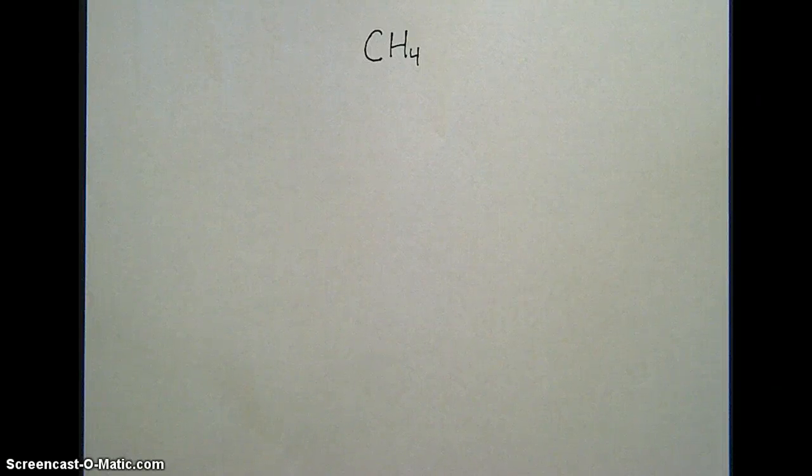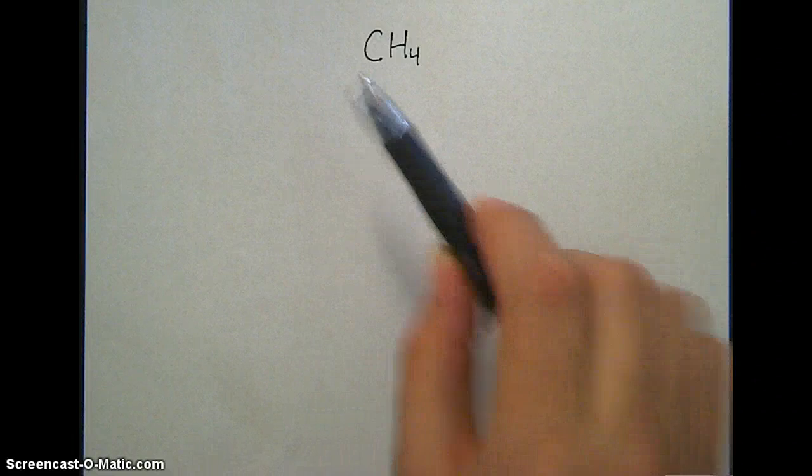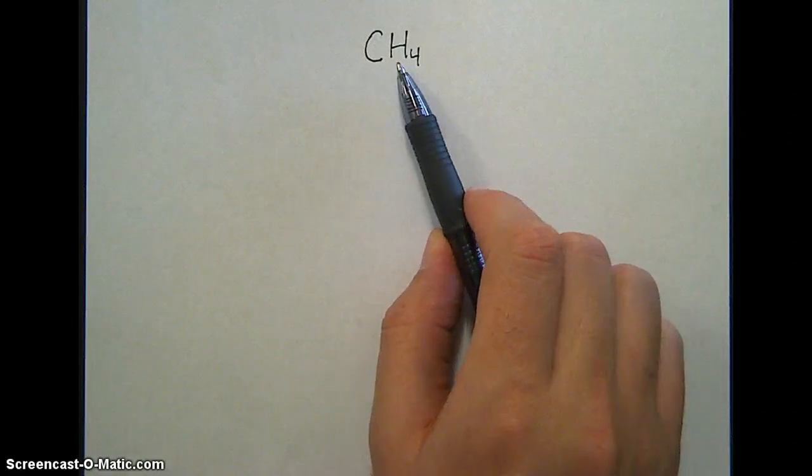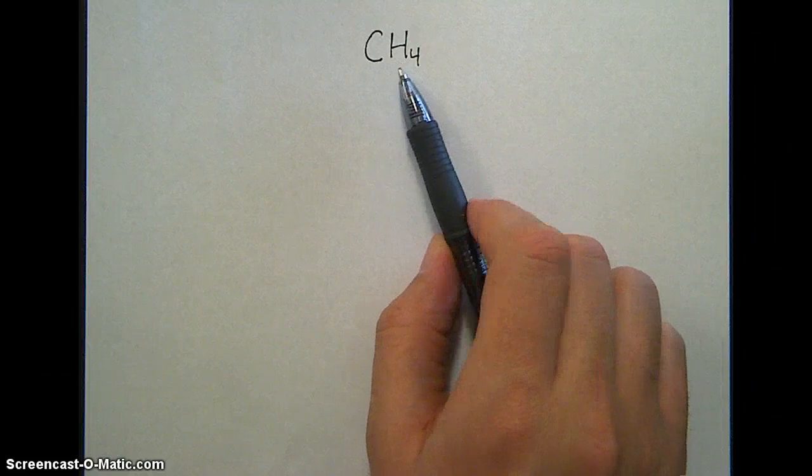Alright kids, we're going to build a model of CH4. CH4 is a covalent compound because I have carbon, which is a non-metal, and four hydrogens that are each non-metals. They're going to be bonded to each other.